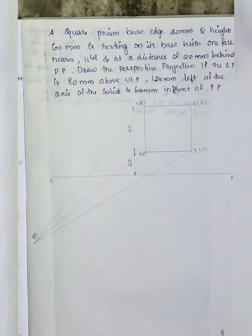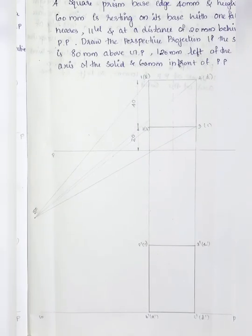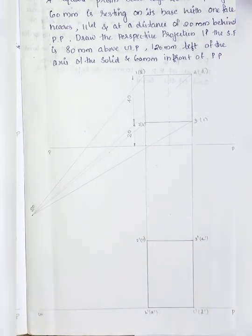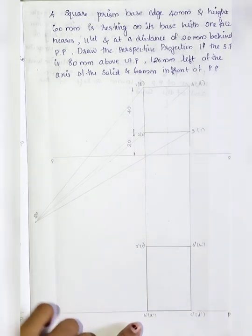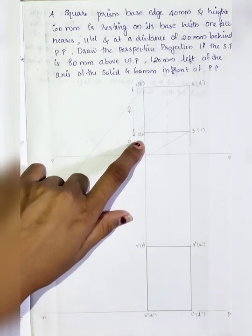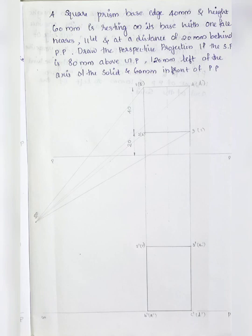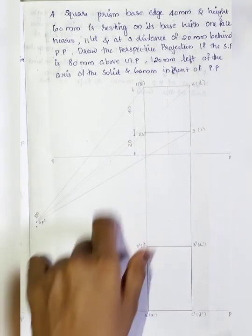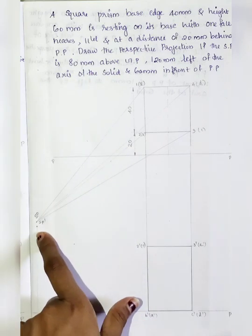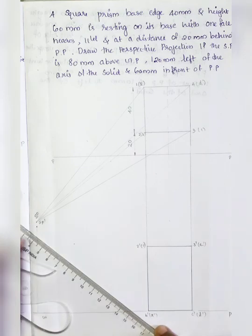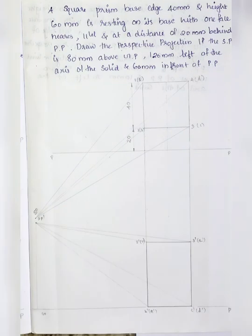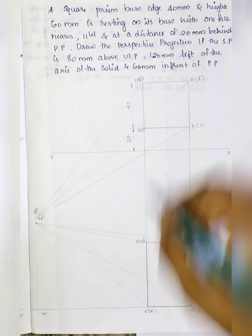Now we will get our front view. We join every point to SP. SP2 is the same point above the ground plane, and we start constructing the perspective projection from there. Now we will begin with the next step.